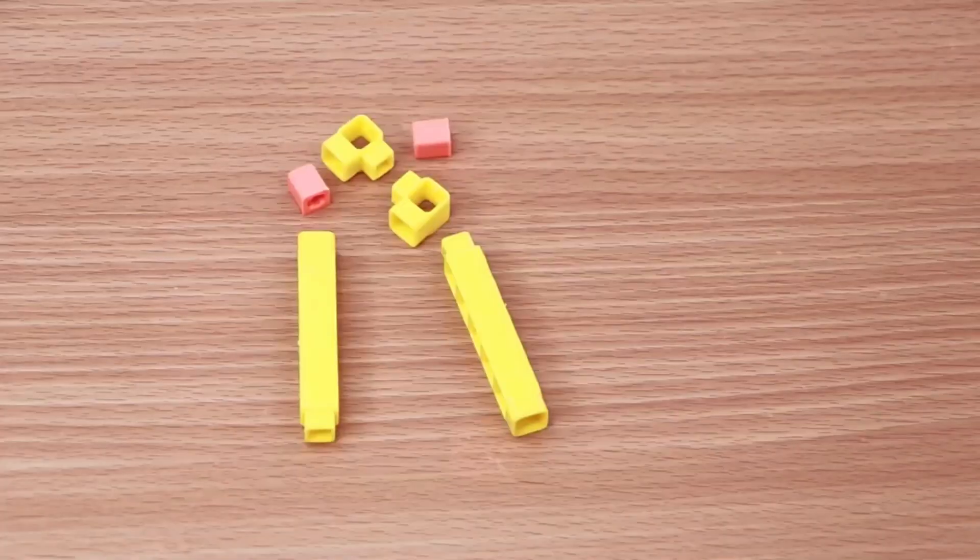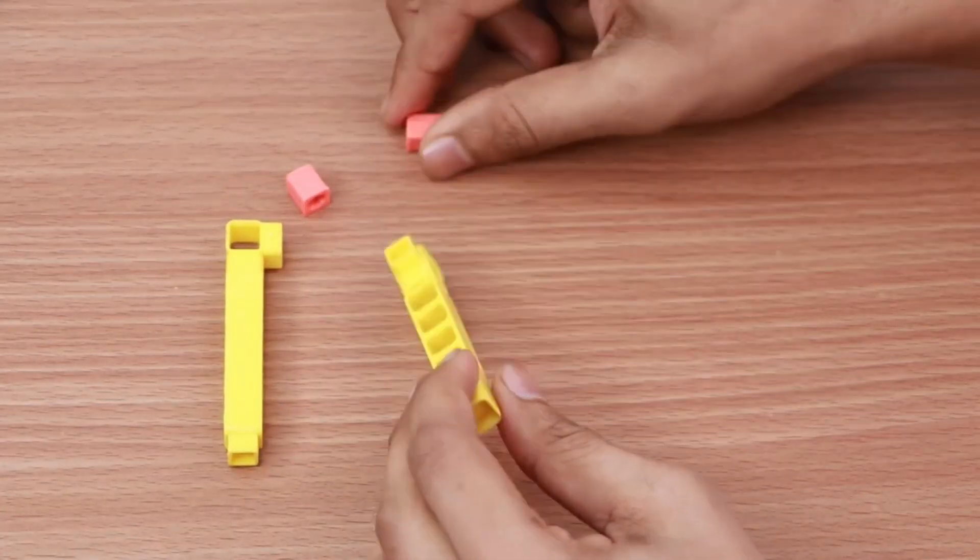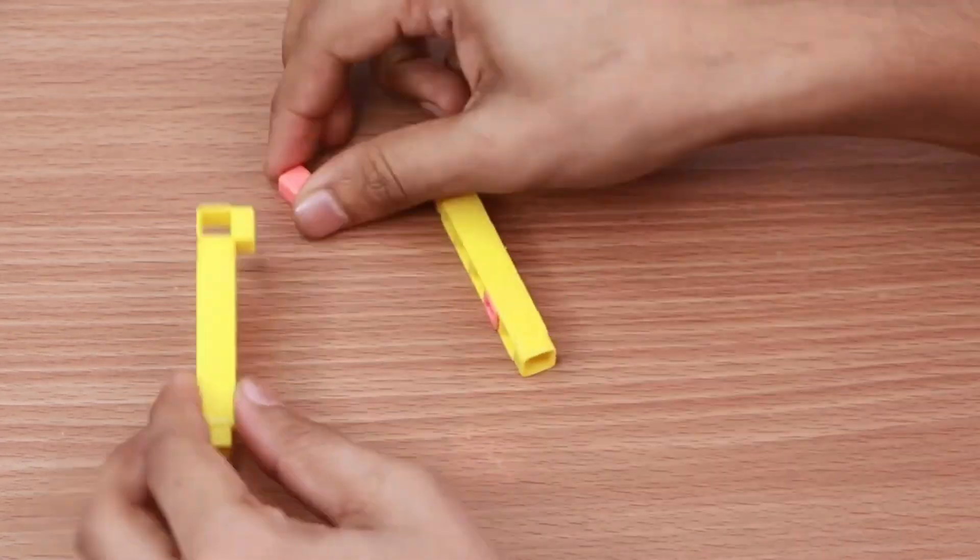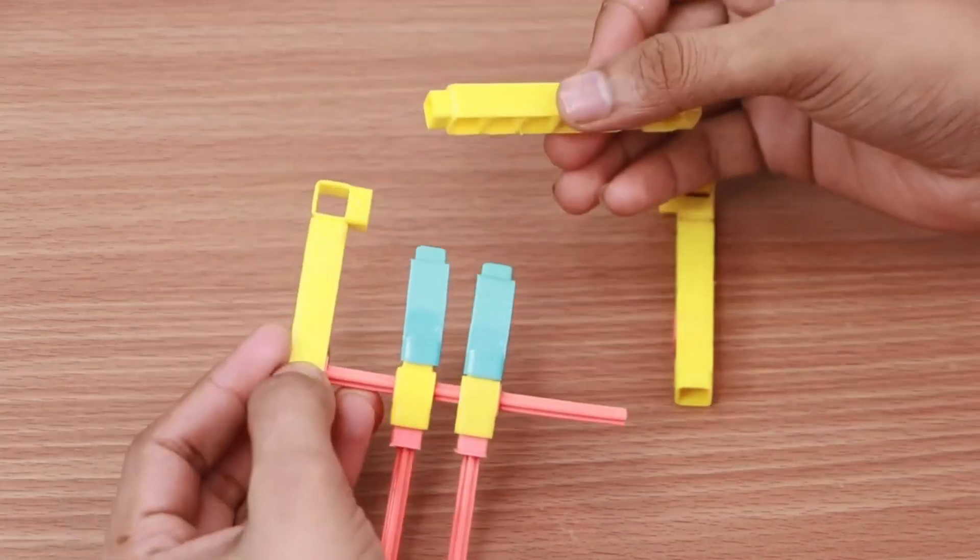Next take two five-hole beams, two one-hole elbows and two B.O. shafts. Join them as shown. To complete the drumsticks assembly, join these parts together.